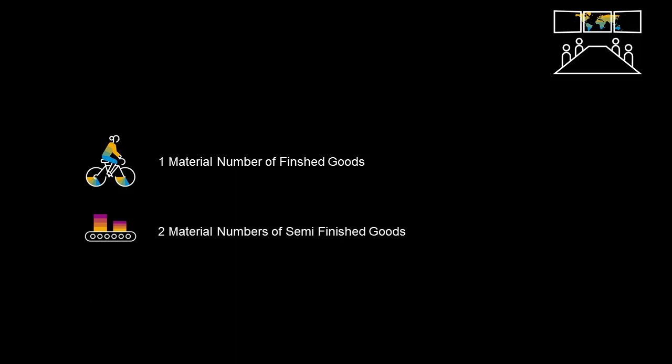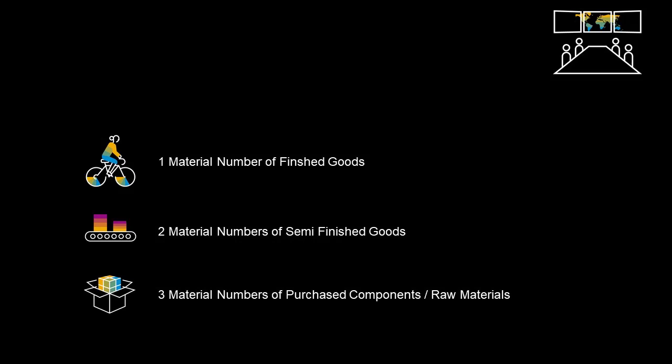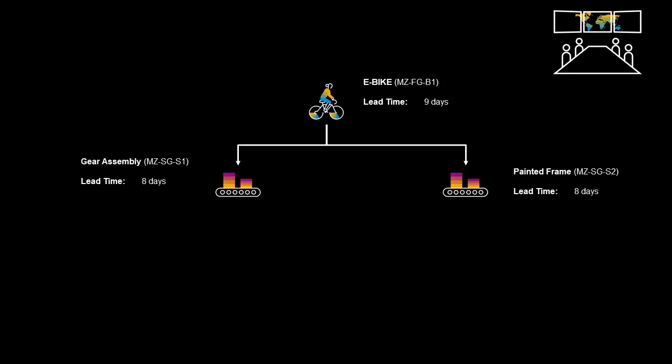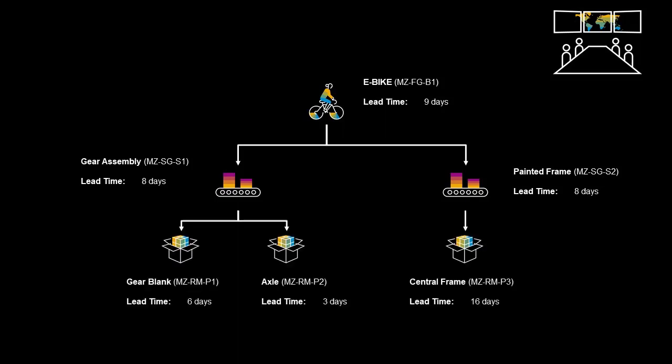We will now go through what we will be looking at in the system. We will have one part number representing the finished good, two sub-assemblies, and three raw materials or components. The finished good is an electronic bike. It consists of two sub-assemblies: a gear assembly and a painted frame. The gear assembly requires a blank gear and an axle. The painted frame requires a central frame to be produced. Strategic decoupling points have been proposed in three places: on the actual finished product, the electronic bike; at the gear assembly; and at the central frame.